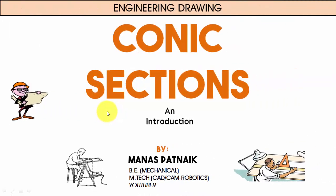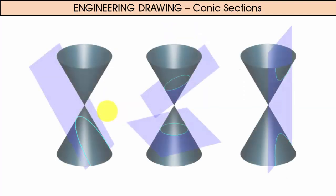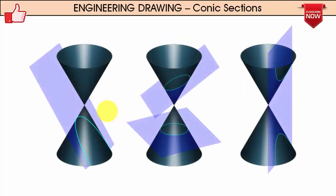Hi there guys, this is your friend and tutor Manas, and in this video we are going to be talking about conic sections. A conic is the curve obtained by the intersection of a plane, called the cutting plane, with the surface of a double-napped cone.